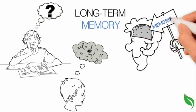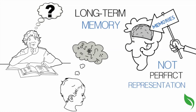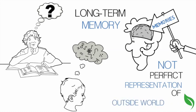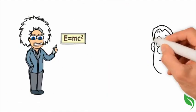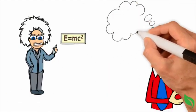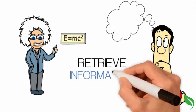We have a lot of room to store memories, but the memories we store are not perfect representations of the outside world. Long-term memory is relatively permanent. However, if we want to maintain easy access to a memory, we need to retrieve that information regularly.